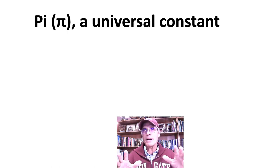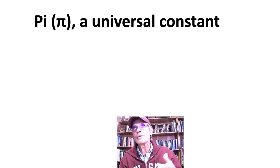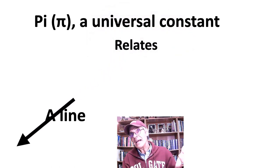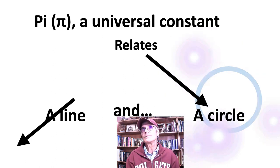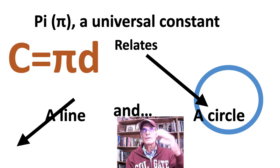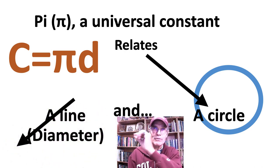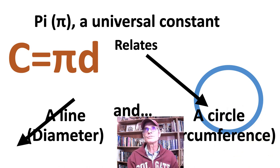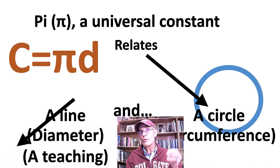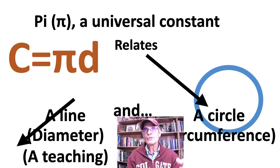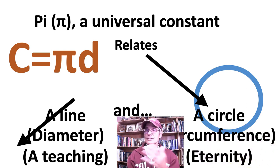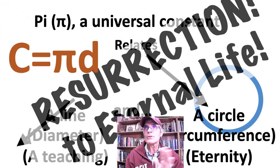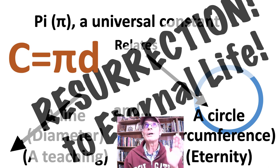Let's look at pi — most people understand it from high school. Pi is 3.14159, a universal constant that relates two things: a line and a circle. Pi relates a diameter — a line through the circle — and when you multiply it by pi, you have the circumference. There's an esoteric meaning too: a line is a teaching, and the psalmist uses line as a teaching. A teaching can lead to a circle as a symbol of eternity. So a teaching can lead to eternity — a concept leading to resurrection or eternal life. Let's plug this in to the fine structure constant.